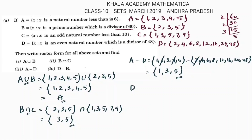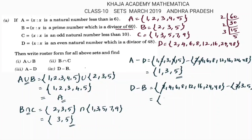Now for D minus B. Set D is {2, 4, 6, 8, 12, 16, 24, 48} minus set B which is {2, 3, 5}. The common element 2 cancels. Whatever is left on the left side is the answer, so D minus B is {4, 6, 8, 12, 16, 24, 48}.